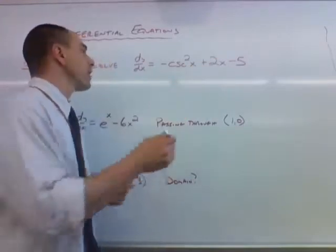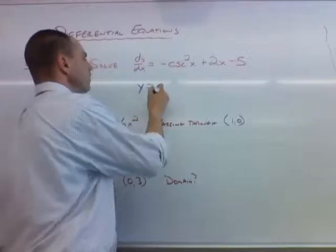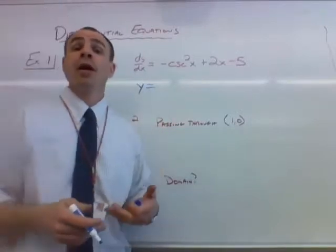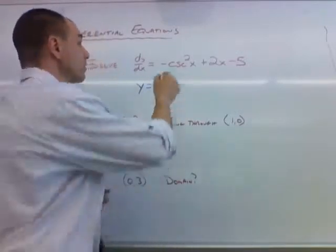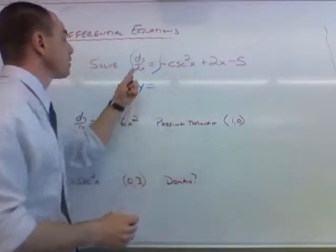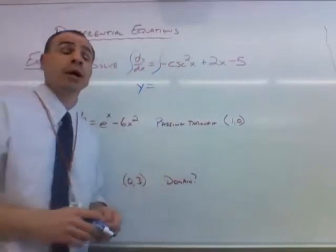So again, we're trying to find the original function y, and we're going to do so by taking the antiderivative. We're going to antiderive. The antiderivative dy/dx is just going to be y.